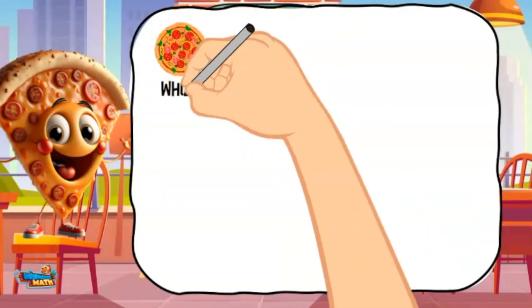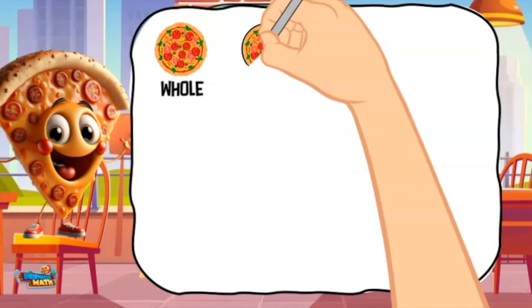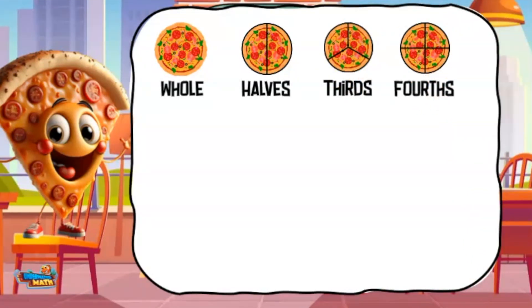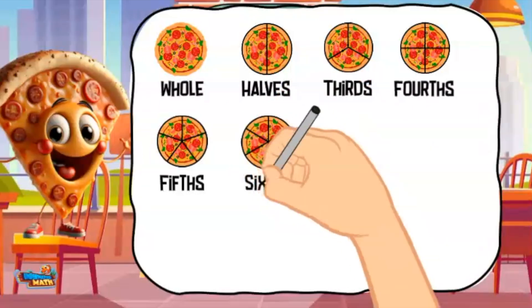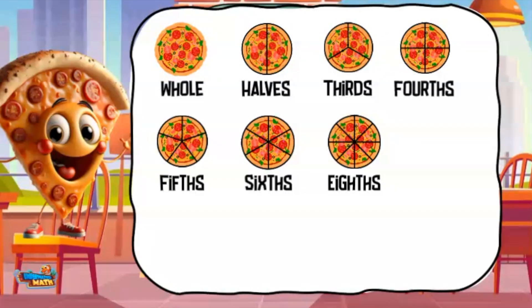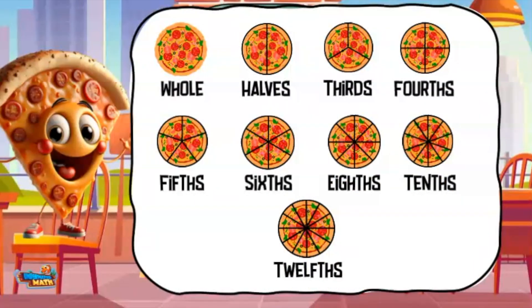I would like to show you some fraction words that may be helpful along the way. The whole is the part of the fraction being broken into parts. If the whole is broken into two equal parts it is called halves. When broken into three parts it is called thirds. Four equal parts are called fourths. Five equal parts are called fifths. Six equal parts are called sixths. When the whole is broken into eight equal parts it is called eighths. Ten equal parts are called tenths. And finally twelve equal parts are called twelfths. These terms are used to describe the denominators of a fraction.